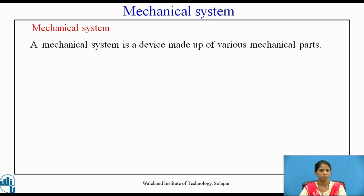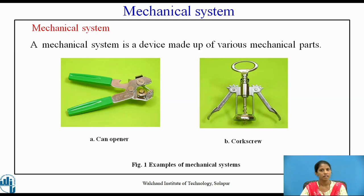A mechanical system is a device made up of various mechanical parts. The input provided to a mechanical system is the effort. When effort is applied, it gives certain motion which moves a load. Examples of mechanical systems are gears and levers. Figure A shows a can opener, where effort is required to open the cap of a can. Figure B shows a corkscrew, where effort is applied to open the cork.